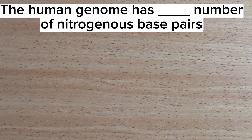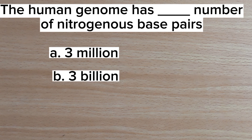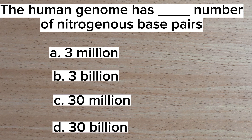Number nine: the human genome has how many nitrogenous base pairs? A. 3 million, B. 3 billion, C. 30 million, D. 30 billion. Answer: B. 3 billion.